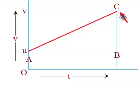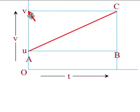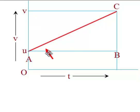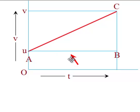C comes out to be the final velocity after time T has passed, so C will be equal to V, as we term the final velocity as V. So initial velocity is U and final velocity is V. AC is the graph. From C, we have dropped a perpendicular CB, and AB is a horizontal line. So CB is basically the difference between the velocities.